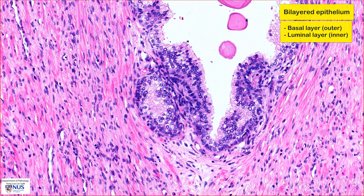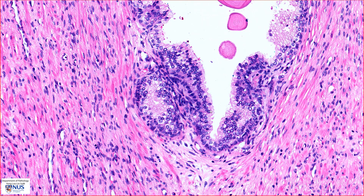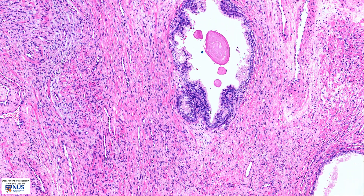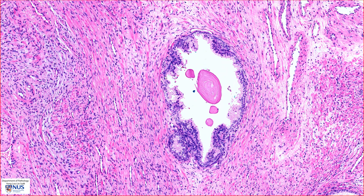Let's look at this area again where we can see the double layered epithelium very clearly — the outer basal layer and the inner luminal layer. The presence of this retained bilayered epithelium is a good sign to tell us that we are likely to be looking at benign prostatic glands.